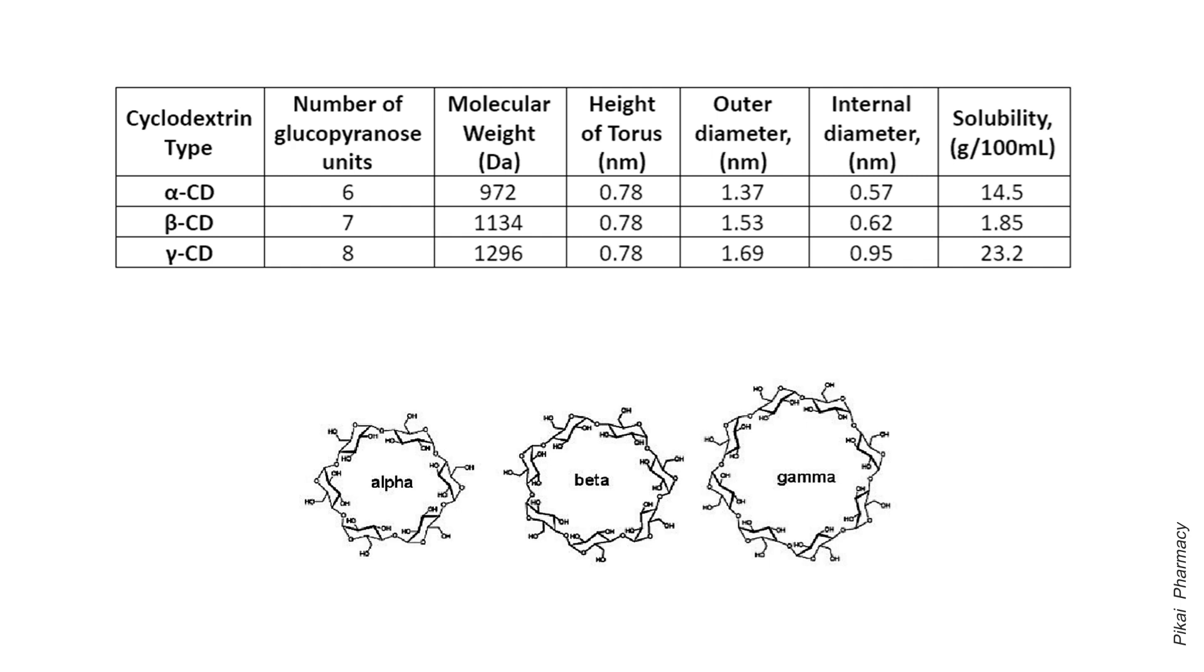Among all these cyclodextrins, the gamma form exhibits the highest water solubility of about 23.2 grams per 100 mL at 25 degrees Celsius.